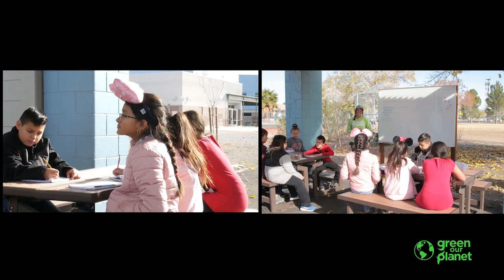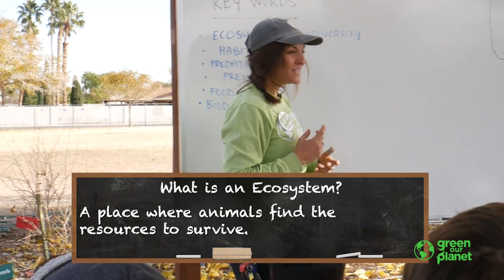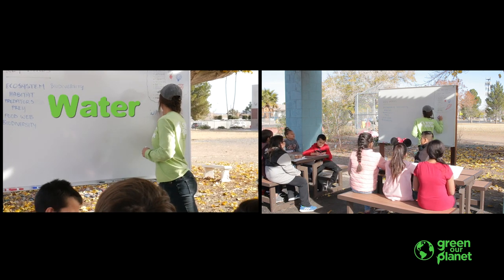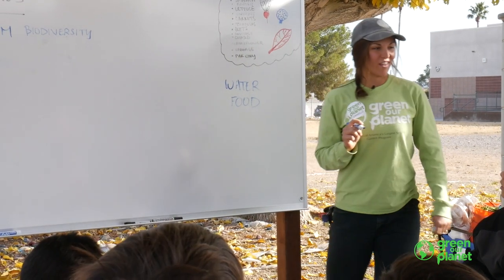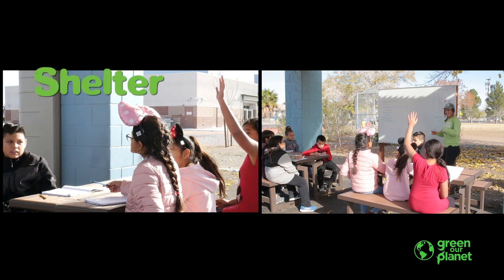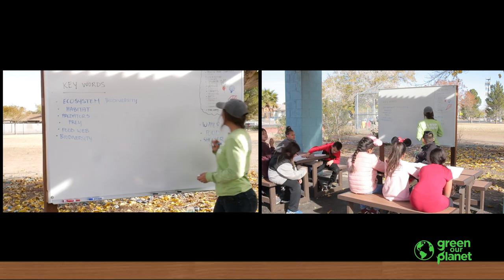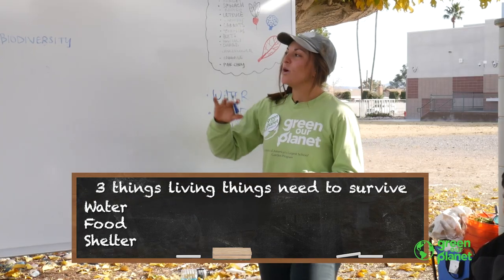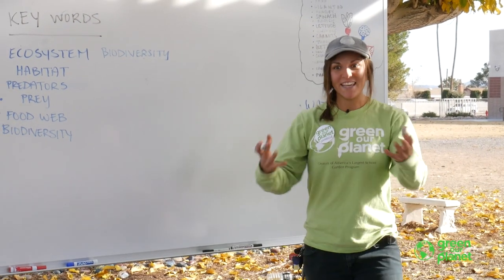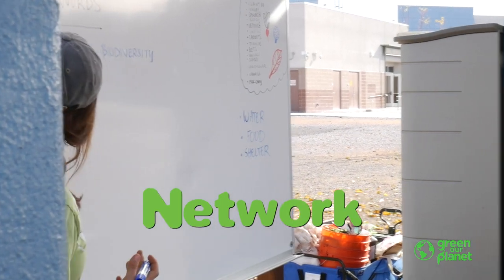An ecosystem is a place where an animal needs to survive — to search for resources for survival. What types of resources do animals or other living things need? Food. Water. What's one more thing? When you guys go to sleep tonight, will you be just laying down on the ground? No — you go to your shelter. So those are the three main things all living things need to survive. An ecosystem is a system in which living things eat each other or require other living things to survive. It's a network — another word for that is food web.